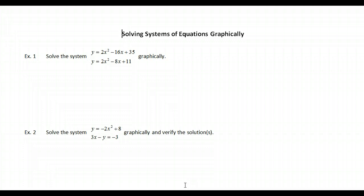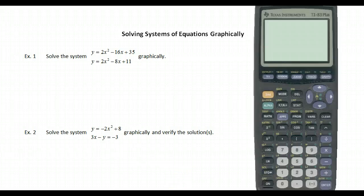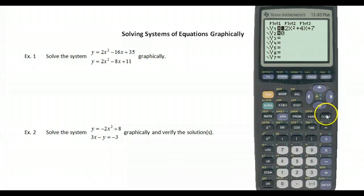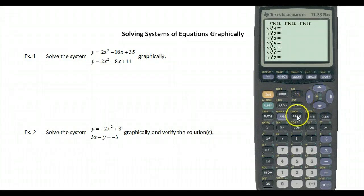Example 1: Solve the system y = 2x² − 16x + 35 and y = 2x² − 11x + 8 graphically. Let's bring up our graphing calculator. Go to y equals, clear out anything that's sitting in there, and let's enter the first equation.